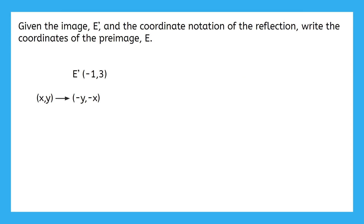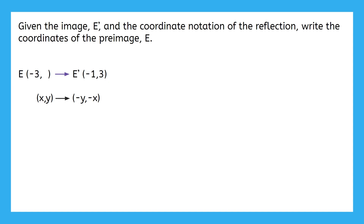Here's the second problem. It says: given the image point E prime and the coordinate notation of the reflection, write the coordinates of the pre-image, point E. This is a tough question because now we're going to have to work backwards to find the pre-image. Pause the video and see what you can come up with. Our coordinate notation tells us that negative x is three. We can write that as an equation and solve for x by multiplying by negative one. We place the value we found for x at the beginning of our pre-image coordinate. We can also see that negative y equals negative one, so y equals one. Setting up equations and solving can help us work backwards to find the pre-image.